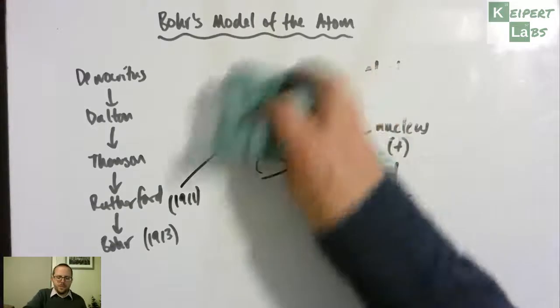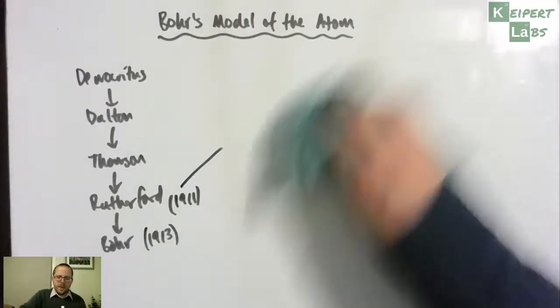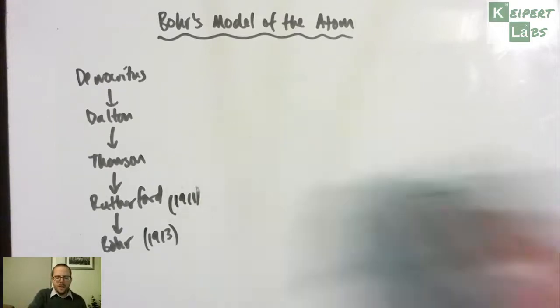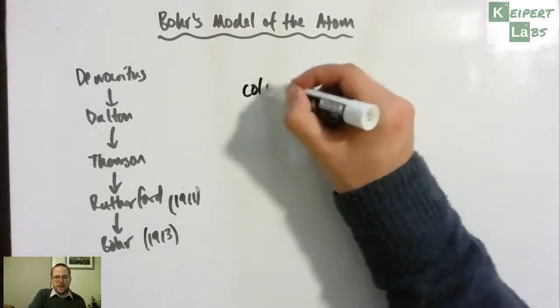What Bohr then identified as a problem was that within that model of the atom, it couldn't explain coloured light.